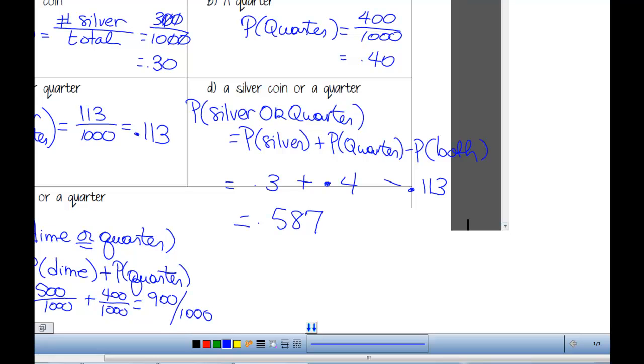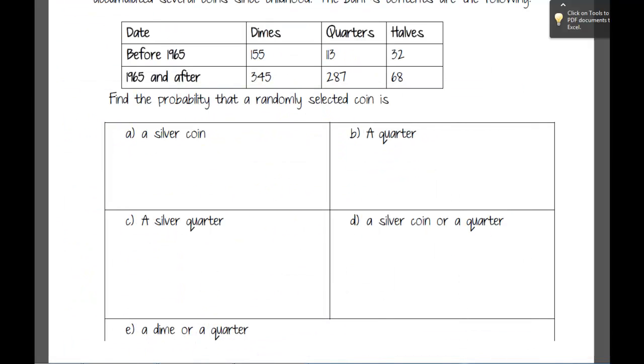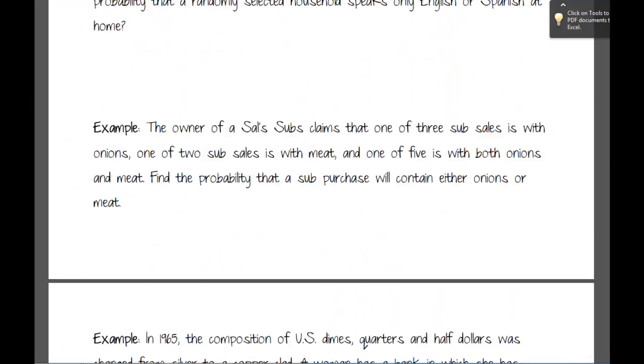No, because a single coin can't be a dime and a quarter, so we saw keyword or, which said addition rule, and then we ask ourselves, are these events mutually exclusive, and these are, so we don't have to worry about both. The probability of both would be 0. Other questions? Okay, we didn't talk about it at all. All right, let's go back there then, because that will be important.